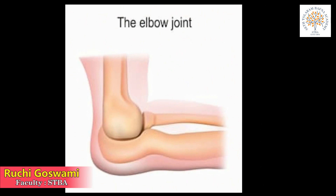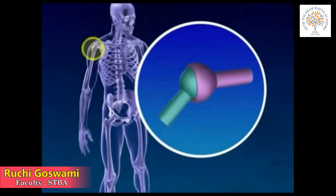First, let's talk about the hinge joint. We can bend our arm at the elbow in only one direction. In the same way, the leg can also be bent at the knee in only one direction. These are called hinge joints — like door hinges, they fold in only one direction.